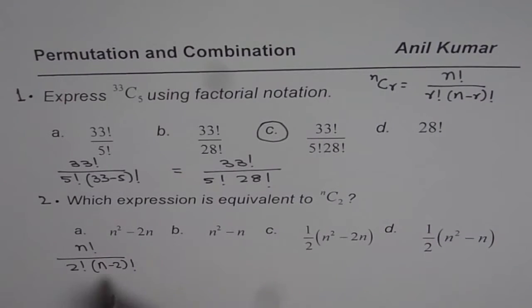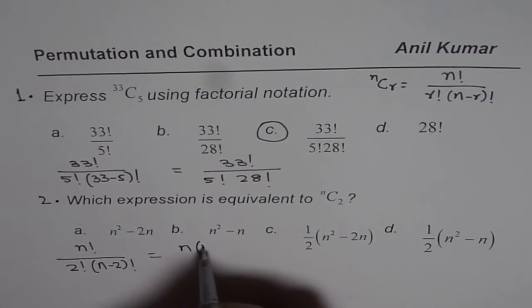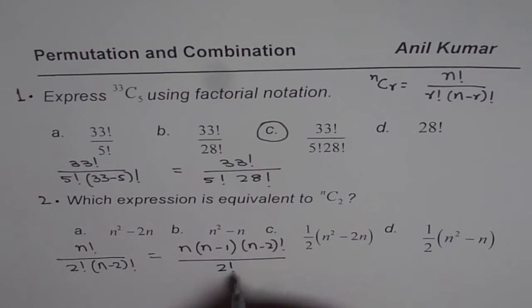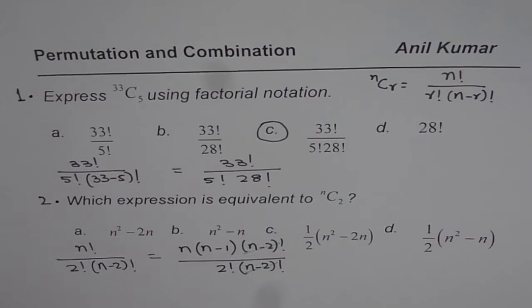We need to simplify this. So n factorial could be written as n times n minus 1 times n minus 2 factorial divided by 2 factorial times n minus 2 factorial. So you can see that n minus 2 factorial cancels out.